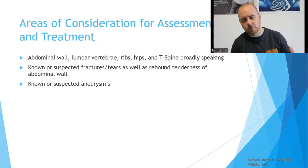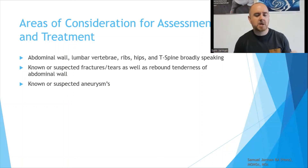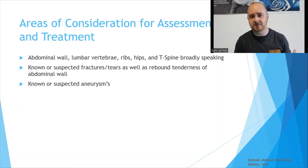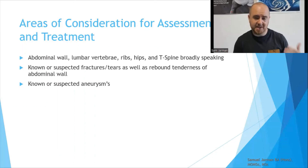The areas we're talking about: the abdominal wall, lumbar vertebrae, ribs, hips, and T-spine broadly speaking. Your red flags — known or suspected fractures or tears anywhere in there, as well as rebound tenderness of the abdominal wall. If there's rebound tenderness of the abdominal wall for any reason, that is a visceral pathology until otherwise diagnosed — an immediate referral. Known fractures: don't treat. Suspected fractures: refer out.